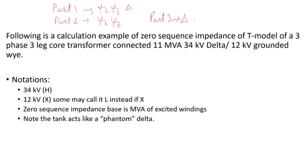Following is a calculation example for the zero sequence impedance T-model of a three-phase, three-leg core transformer connected 11 MVA, 34 kV delta, 12 kV grounded Y. The high side of 34 kV is called H, and 12 kV is called X — some may call it L instead of X; they mean the same thing. The zero sequence impedance base is the MVA of the excited winding, so in this case both high and low side are 11 MVA, which will be the base MVA.